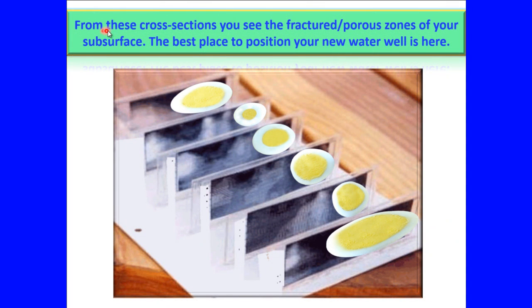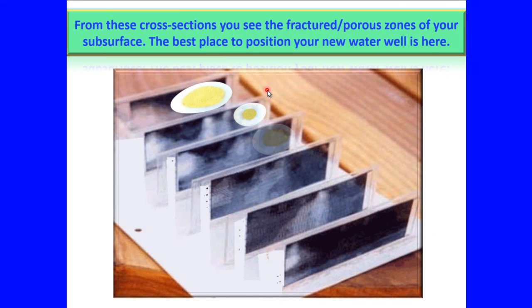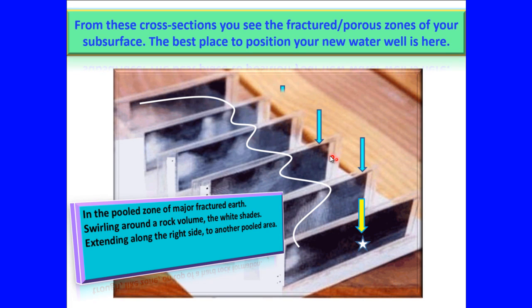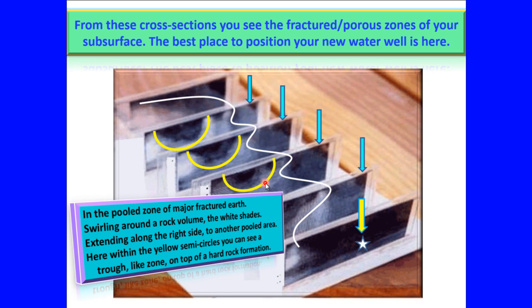From these cross sections you see the fractured porous zones of your subsurface. The best place to position your new water well is here, in the pooled zone of major fractured earth, swirling around a rock volume, the white shades, extending along the right side to another pooled area. Here, within the yellow semicircles, you can see a trough-like zone on top of a hard rock formation.